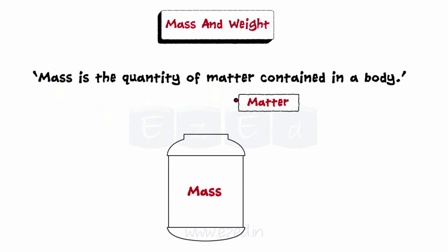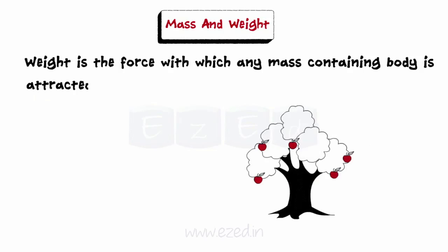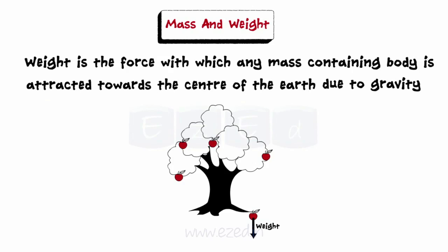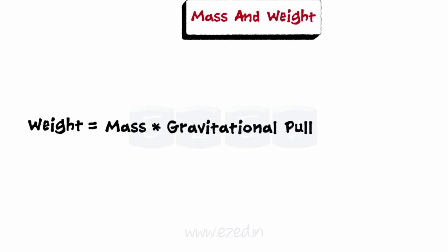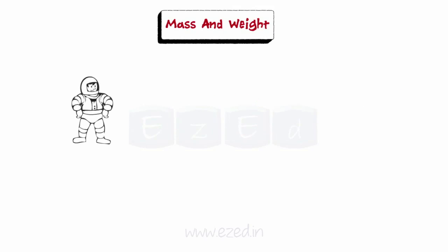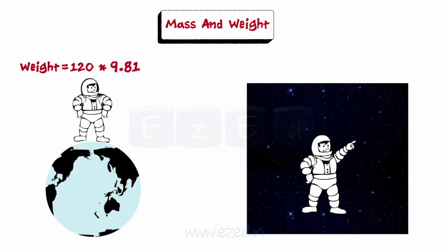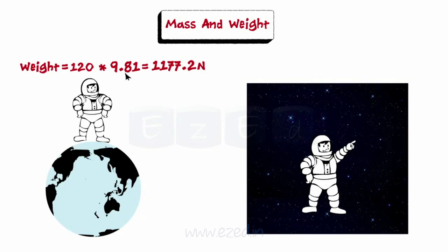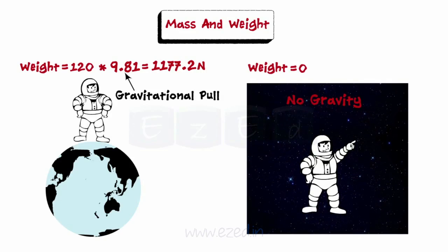Mass is the quantity of matter contained in a body. Mass is independent of the gravitational force and always remains the same for a body. On the other hand, weight is the force with which any mass-containing body is attracted towards the center of the Earth due to gravity. Therefore, weight always acts vertically downwards. Weight is the product of a body's mass and the gravitational pull acting on it. On the surface of the Earth, this pull is found to be 9.81 m/s². Consider an astronaut whose mass is 120 kilograms. The mass will be the same on Earth as well as anywhere in space. His weight on Earth would be equal to 1177.2 newtons, but in space his weight would be zero, as there is no gravity in space. Therefore, he would float in outer space.